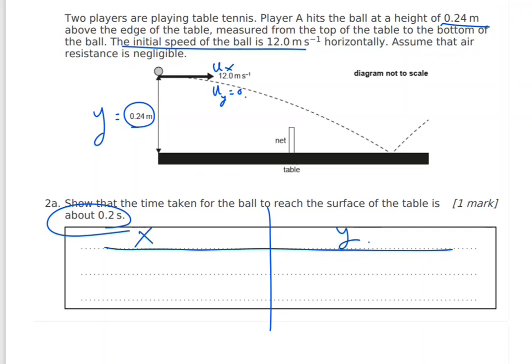For the horizontal (x) direction, there is no acceleration. So the only equation of motion we have is: displacement in the x-direction equals the initial velocity in the x-direction times time.